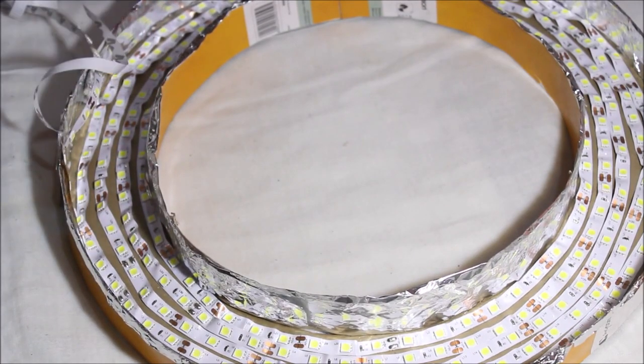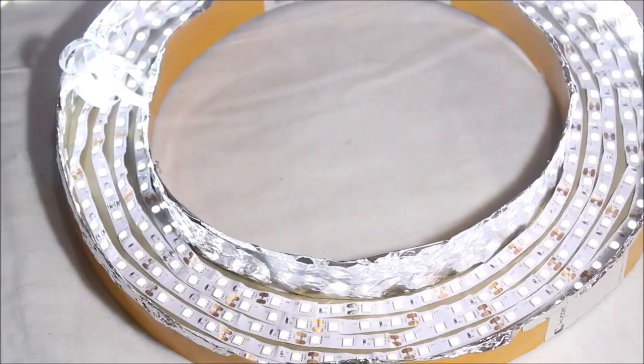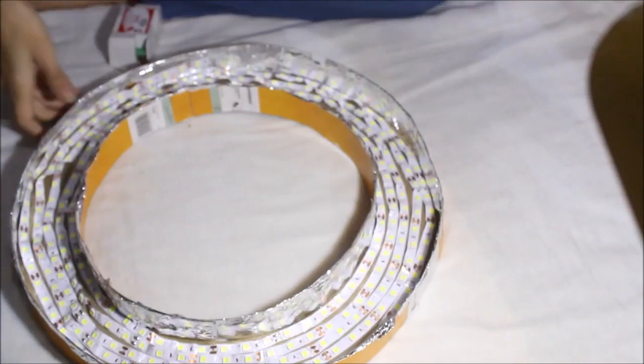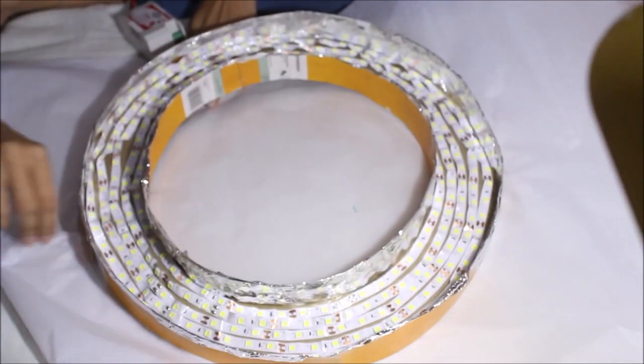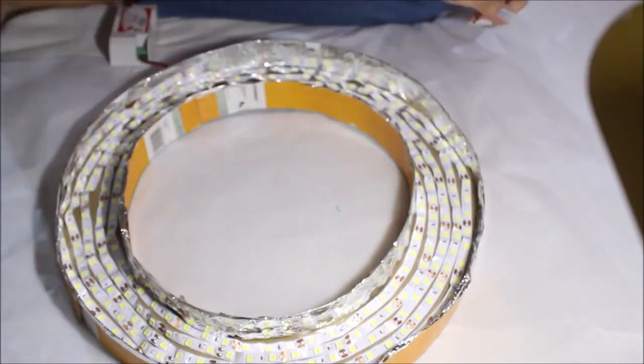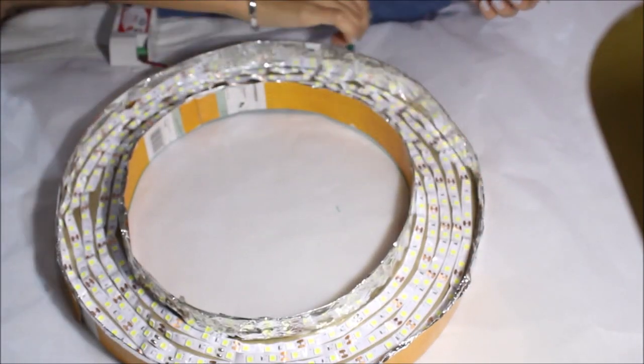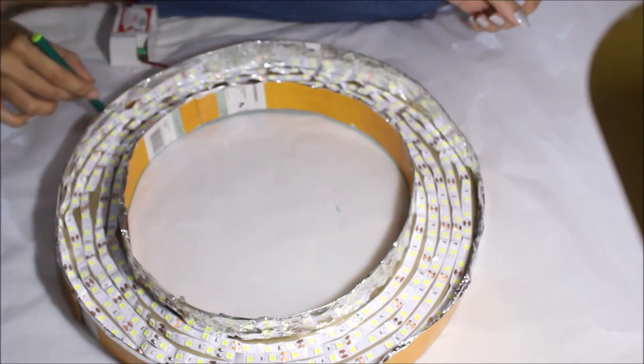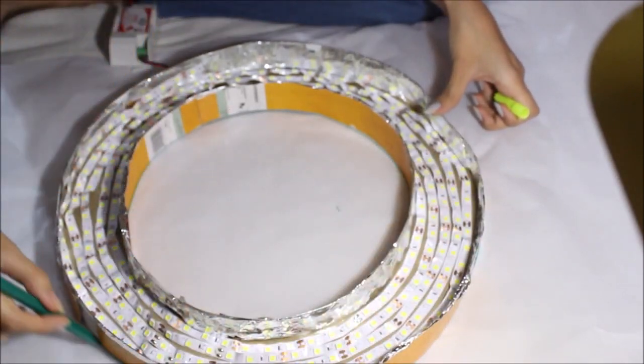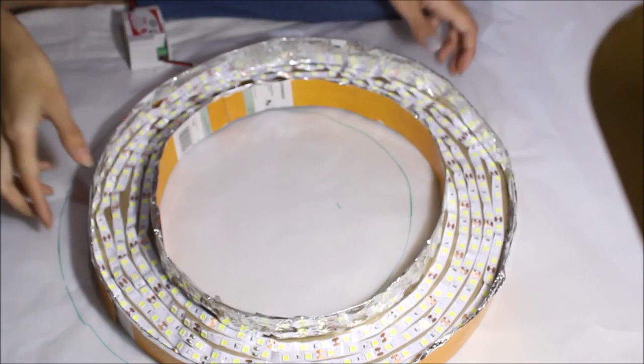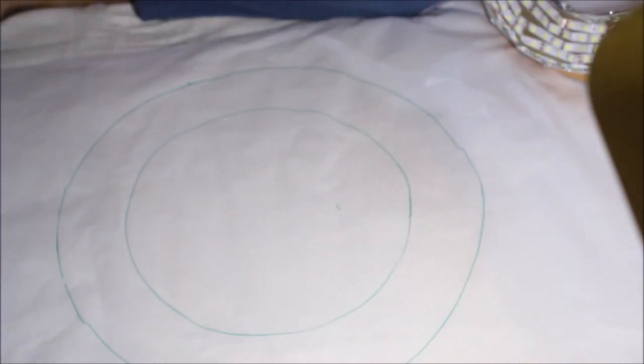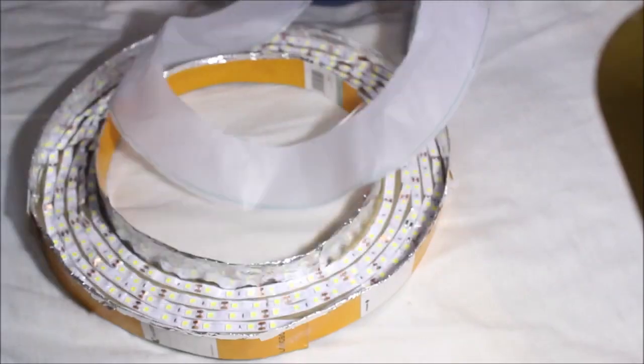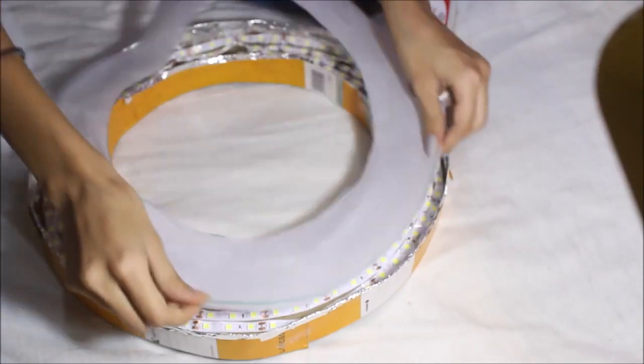And then switch off the light and see if it's still working. So this is very bright and it would look very bright on your face. So for that you need to use butter paper and just keep the butter paper under it. Again using a sketch pen, draw the outline of the ring light. Cut the outline that you made on the butter paper so it would look something like this, and then you need to stick it.